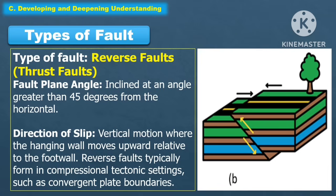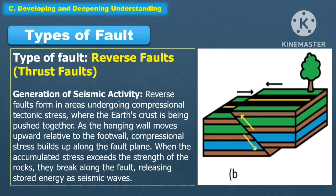Another type of fault is the reverse fault, or thrust fault. The fault plane angle is inclined at an angle greater than 45 degrees from the horizontal, and the direction of slip is vertical motion where the hanging wall moves upward relative to the foot wall. Reverse faults typically form in compressional tectonic settings such as convergent plate boundaries. Reverse faults form in areas undergoing compressional tectonic stress where the earth's crust is being pushed together. As the hanging wall moves upward relative to the foot wall, compressional stress builds up along the fault plane. When accumulated stress exceeds the strength of the rocks, they break along the fault.